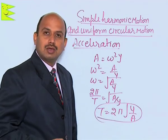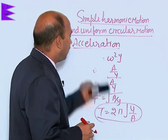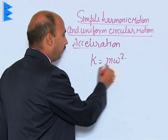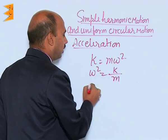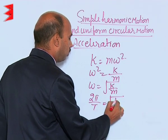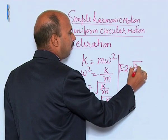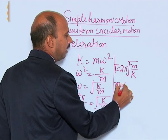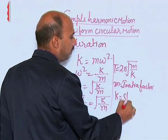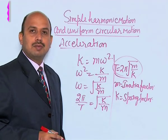This is the time period of the body having simple harmonic motion in terms of displacement and acceleration. We can also find the time period another way: since K is equal to M omega square, we can write omega square is equal to K upon M, so omega is equal to under root of K upon M, and 2 pi upon t equals under root of K upon M. Therefore t is equal to 2 pi under root of M upon K, where M is the inertia factor and K is the spring factor.